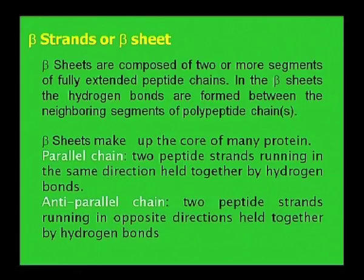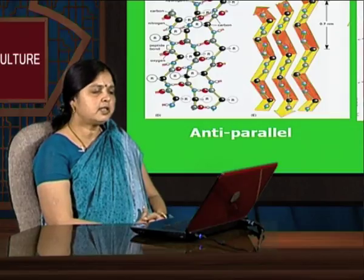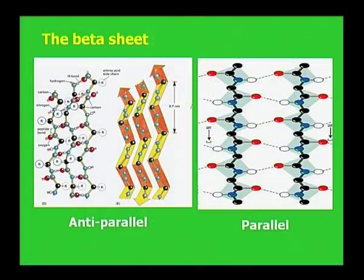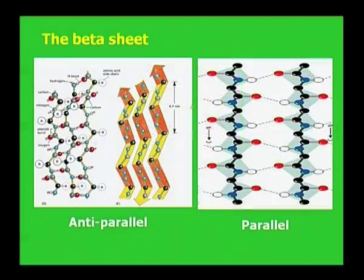The beta sheet makes up the core of many proteins. In the beta sheet the polypeptide chain may be parallel or anti-parallel. In the parallel arrangement, two polypeptide chains run in the same direction held together by hydrogen bonds, while in the anti-parallel arrangement, two polypeptide chains run in the opposite direction held together by hydrogen bonds. This is the structure of the beta sheet showing parallel and anti-parallel directions.